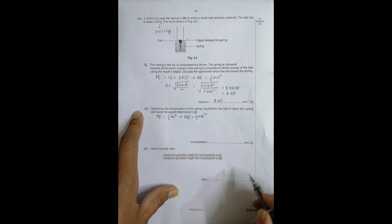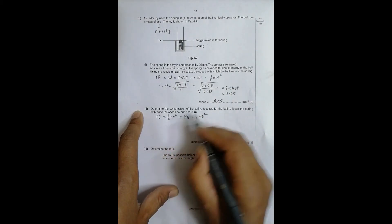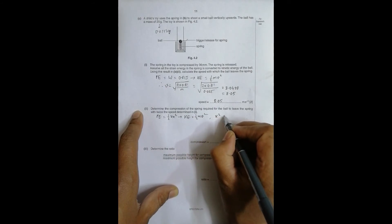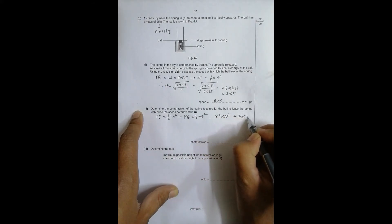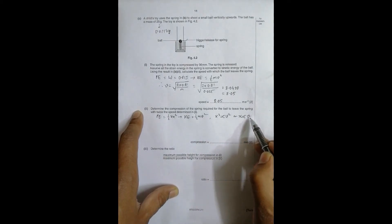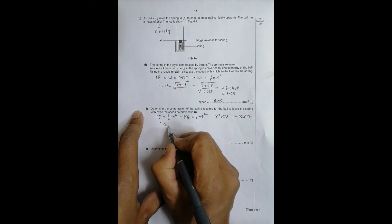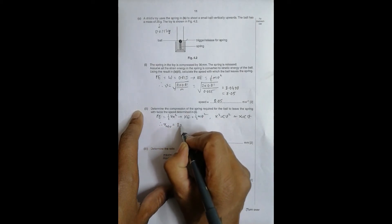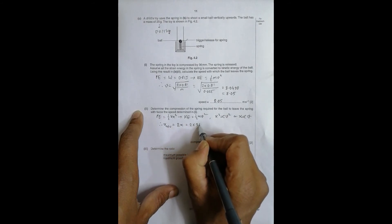Which equals 1/2 mv^2. It means that m is constant for the body, half constant, k constant, so that means x^2 is proportional to v^2, which further means that x is proportional to v. If v needs to be double, x also needs to be double. So the new x is equal to twice of x, that's equal to 2 into 36 millimeter, equal to 72 millimeters.